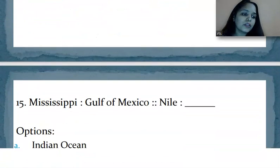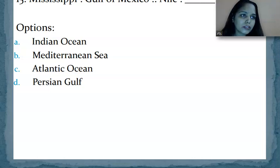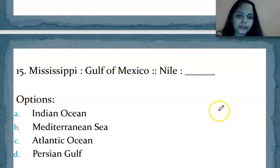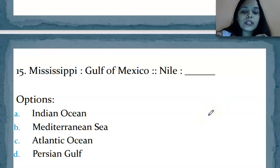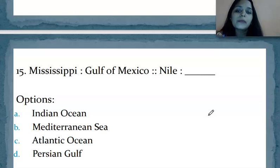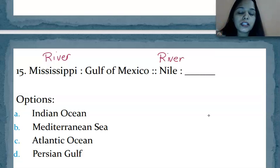Last question of the video. We are moving to our last question. Mississippi is related to Gulf of Mexico in the same way Nile is related to which one? The most important thing you should know - this is a river. This is a river. You understand Ganga and Yamuna, but when such words, such river names come, you get confused. We're not talking about any civilization or culture. Mississippi is a river. They've given you Gulf of Mexico. That means river and where the river is flowing into, where it's meeting. Mississippi river falls into Gulf of Mexico in the same way Nile river flows into Mediterranean Sea.